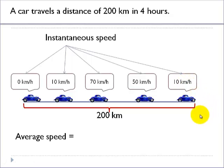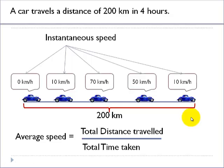Now, to find the average speed, we have to take the total distance traveled divided by total time taken for the entire journey. In this case, when we go back and look, a car travels a distance of 200 kilometers in four hours. So, the total distance traveled by the car is 200 kilometers and the time taken is 4 hours.